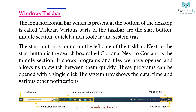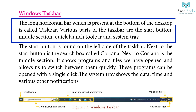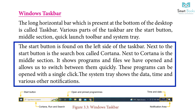Windows Taskbar: The long horizontal bar present at the bottom of the desktop is called the taskbar. Various parts of the taskbar are: the Start button, middle section, Quick Launch toolbar, and system tray. The Start button is found on the left side of the taskbar. Next to the Start button is the search box called Cortana. Next to Cortana is the middle section, which shows programs and files we have opened and allows us to switch between them quickly. The system tray shows the date, time, and various other notifications.